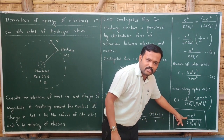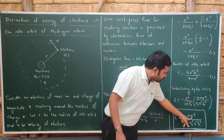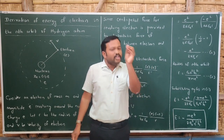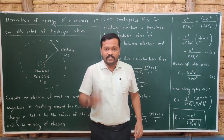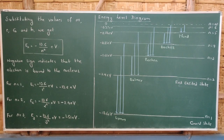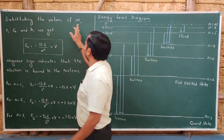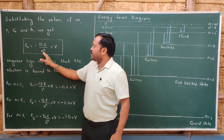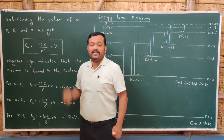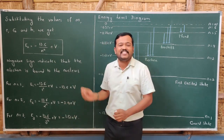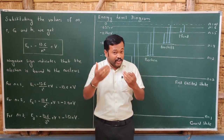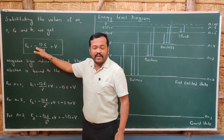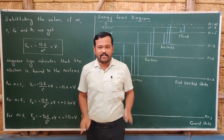Since m, e, ε₀, and h are all constants, substituting their values gives the simpler form: E_n = -13.6/n² electron volt. The energy is negative because the negative sign indicates that the electron is bound to the nucleus, and we need to supply energy to remove the electron from that orbit.